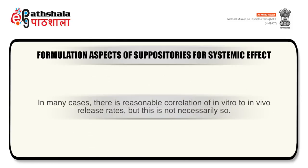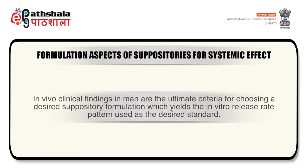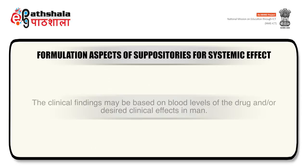In many cases there is reasonable correlation of in vitro to in vivo release rates, but this is not necessarily so. In vivo clinical findings in men are the ultimate criteria for choosing a desired suppository formulation, which yields the in vitro release rate pattern used as the desired standard. The clinical findings may be based on blood levels of the drug and desired clinical effects in men.